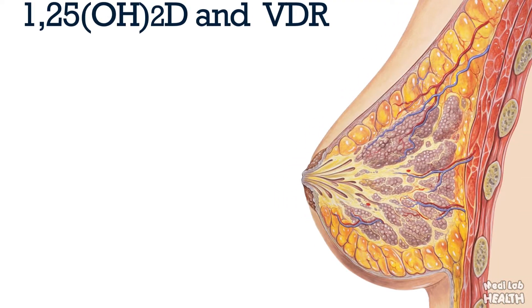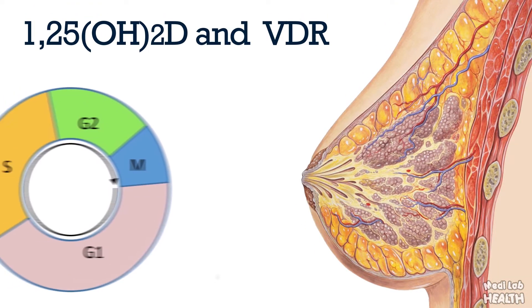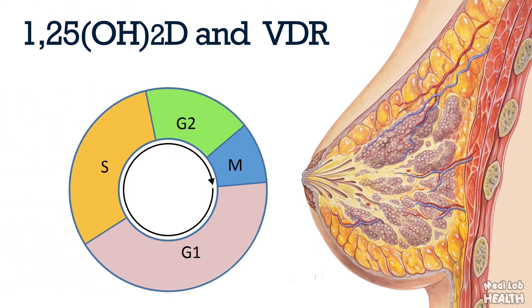In human cell lines derived from normal breast tissue and in breast cancer cells, 1,25-dihydroxyvitamin D and other VDR agonists interfere with cell cycle arrest, differentiation, and apoptosis, depending on autophagy, the particular type of cell, cellular microenvironment, and the activity of other signaling pathways.